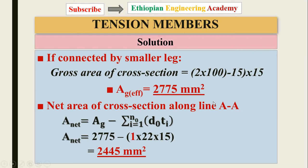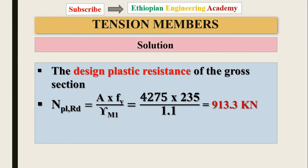If the plate is connected by the smaller leg, the gross area of the cross section is: 2 × 100 minus 50, multiplied by the thickness. The net area of the cross section along line A is the gross area minus the hole diameter times thickness, with number of holes equal to one. This gives the net area along line A. The design plastic resistance of the gross section is then calculated using these formulas, giving the result.